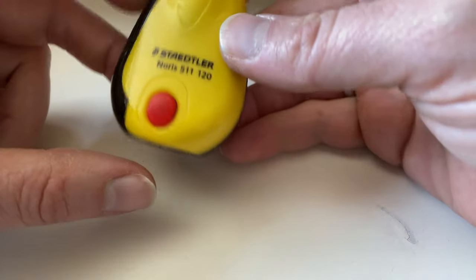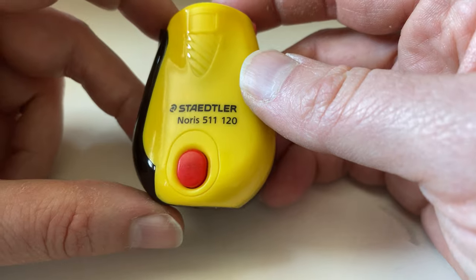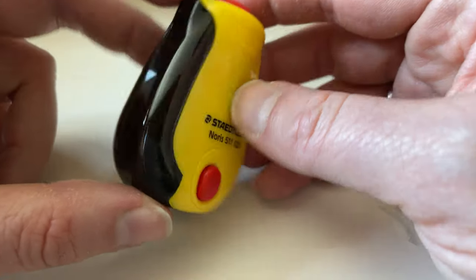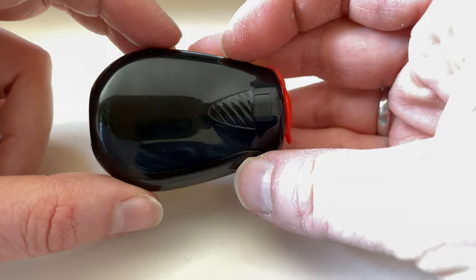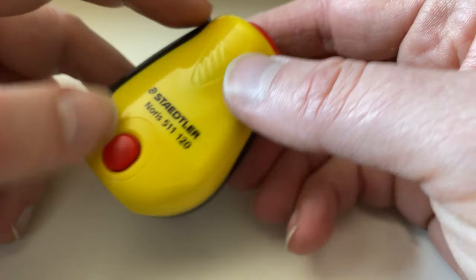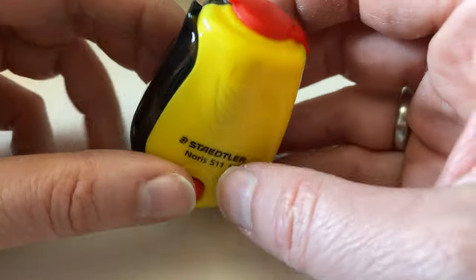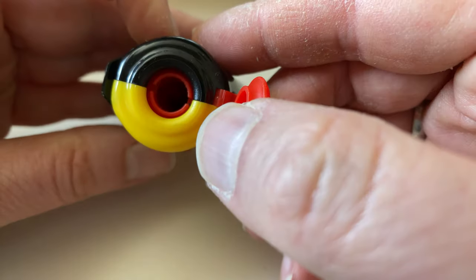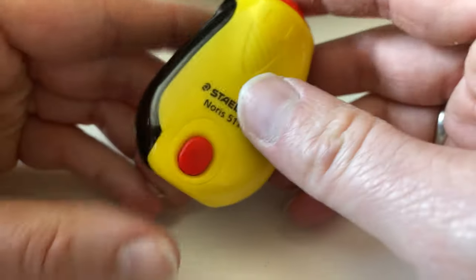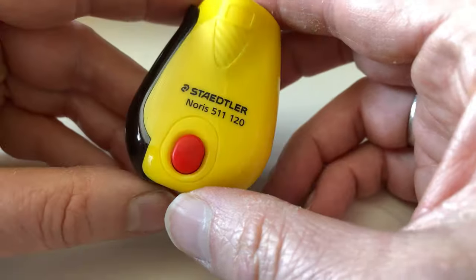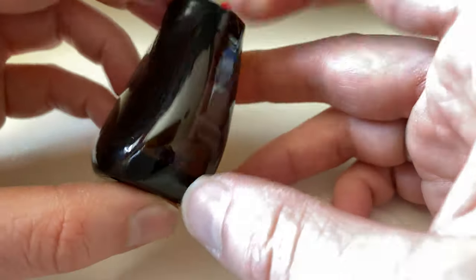Okay, we'll have a quick look at the Staedtler Norris 511 120 sharpener. There are similar sharpeners out there, I mentioned that in the past, but this is a version that Helmut Hufnagel improved and that has the typical Staedtler Norris look.